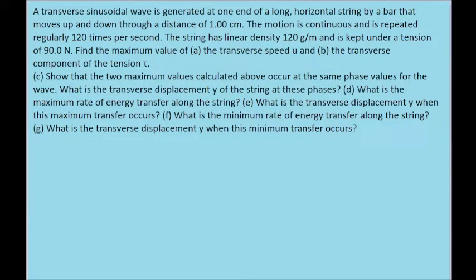Here's a lengthy multi-part problem that's not quite as horrific as it looks. We're given information on a bar moving up and down that's generating a transverse sinusoidal wave through a string. The first thing we want to do is find the maximum value of the transverse speed — the speed at which the wave propagates.